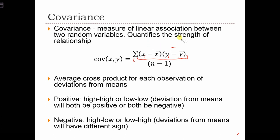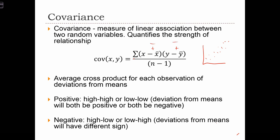Now let's think about what happens to covariance if x and y are positively related to one another. If x and y are positively related, that means when we have high x values we're likely to have high y values, and when we have low x values we're likely to have low y values. In that case we're going to be in the situation with a positive-positive or a negative-negative, and when we take the summation of all the cross product terms the covariance is going to be a larger positive number. So we have a larger positive number when we have a positive relationship between the two variables — when the two variables co-vary positively.